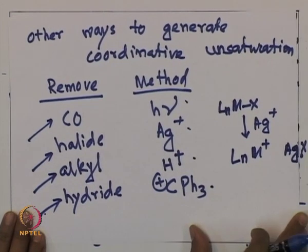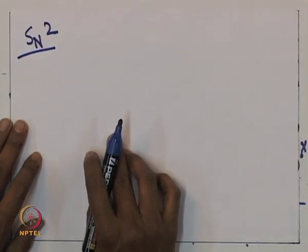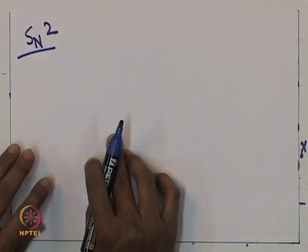What we have seen so far is the concerted mechanism, with one example each of a 16-electron complex (Vaska's complex) and an 18-electron complex (Mn(Cp)(CO)₃). Next, I will briefly discuss the SN2 mechanism of oxidative addition, and we will continue with both SN2 and radical mechanisms in the next class.